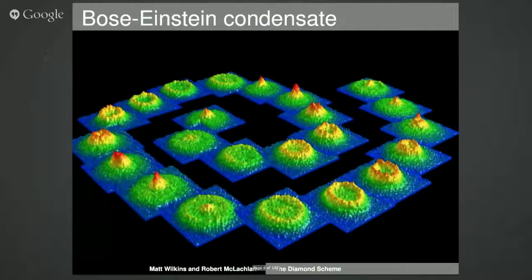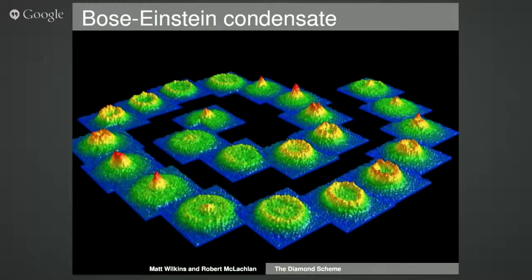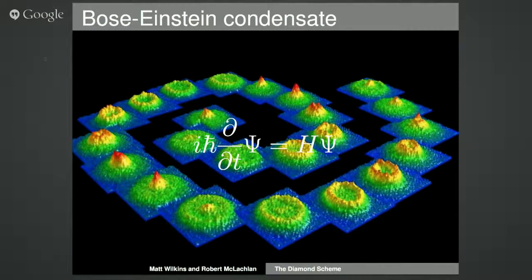Here we have a numerical simulation of a Bose-Einstein condensate — really cold atoms. The spiral shape is showing the time evolution of the simulation, and the PDE that models this — what the simulation is actually using — is the Schrödinger equation: first order in the time derivative, and inside the Hamiltonian H there are some space derivatives.